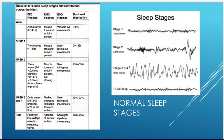Non-REM stage 2 is where you see sleep spindles at 12 to 14 hertz and K complexes — I'll use the mouse to point that out on the diagram. Theta waves are 4 to 7 hertz, sleep spindles and K complexes are present. Muscle tone and activity is present but begins to slow. You still have slow rolling eye movements, as those are characteristic of non-REM sleep. The nocturnal distribution is somewhere between 45 and 55%, so this is quite a bit of your sleep.